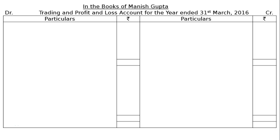The question is: the following are the balances extracted from the books of Manish Gupta on 31st March 2016. This is the first question on adjustments. We are asked to prepare the trading and profit and loss account and the balance sheet as at 31st March 2016, after meeting the following adjustments.